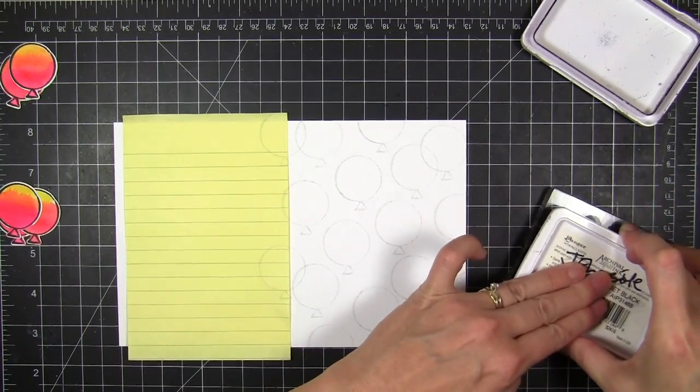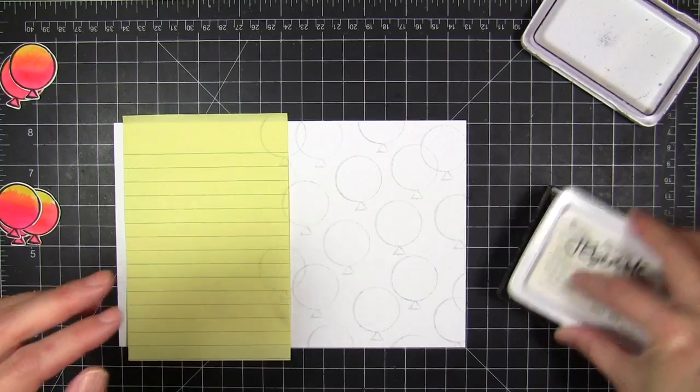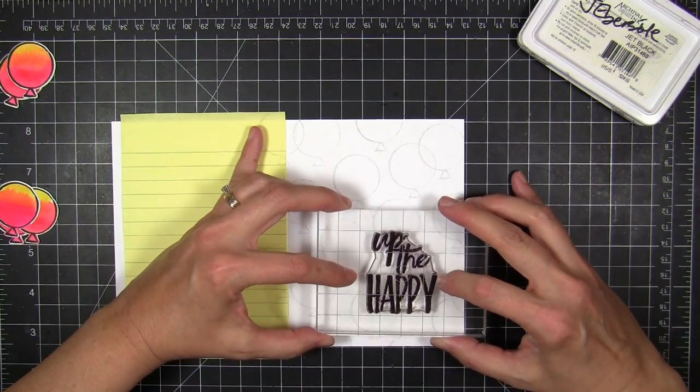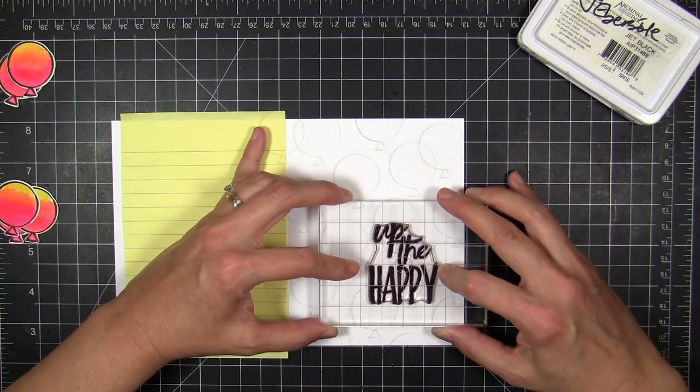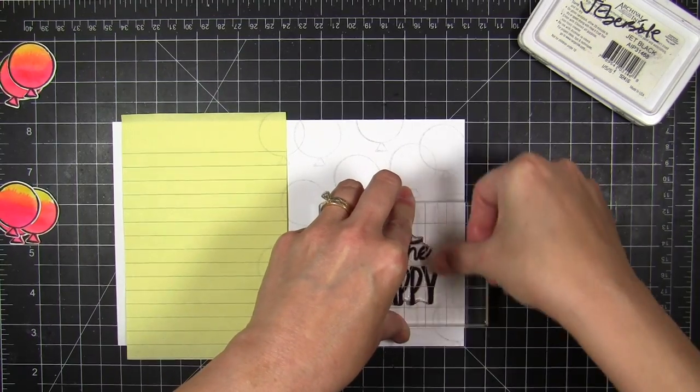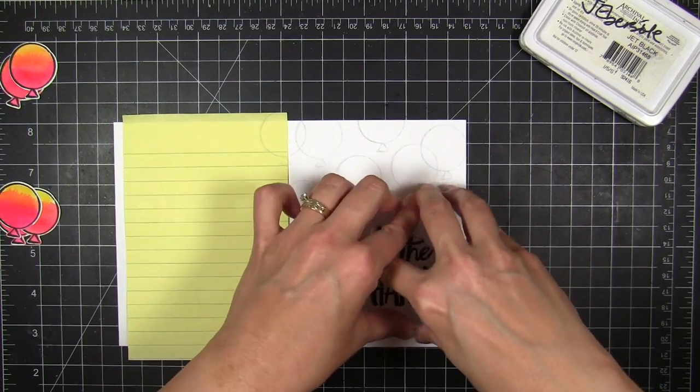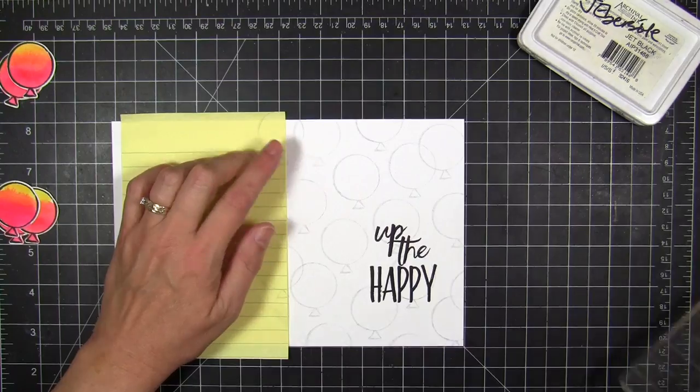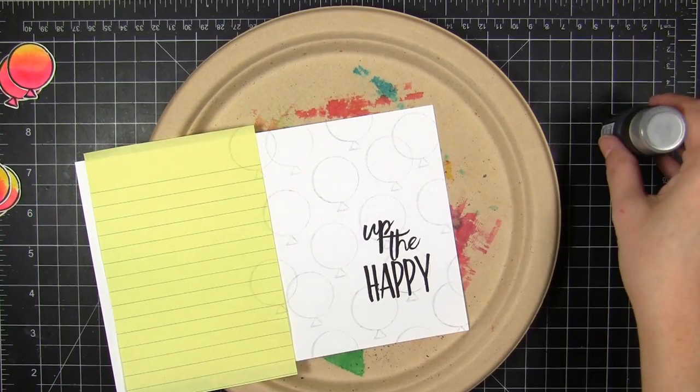So now I'm going to take the desired sentiment, which is Up the Happy, which I just love that saying, and I'm going to ink that up with archival jet black because I wanted a nice, fast drying, deep, rich black here to go in the foreground of my card. And it'll be a nice contrast against the backdrop there.